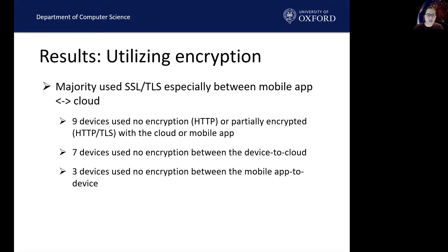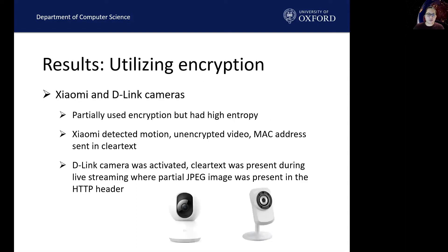Research question two: do IoT devices use encryption when sending and receiving information from the cloud and the mobile app? We examined the unencrypted traffic for any evidence potentially useful for investigation. We found the majority of devices encrypted their network traffic, especially between the mobile app and the cloud. Overall, we found nine devices use no encryption with the cloud or mobile app, seven devices use no encryption between device and cloud, and three devices use no encryption between the mobile app and device. Specifically, the Xiaomi camera communicated to the cloud using no encryption, and the D-Link camera communicated to the mobile app in clear text.